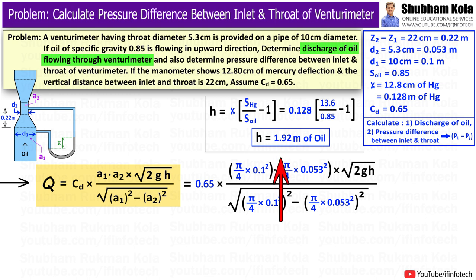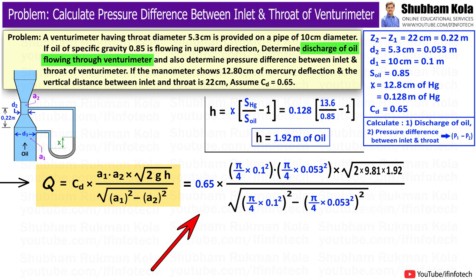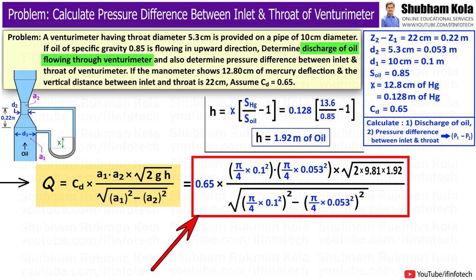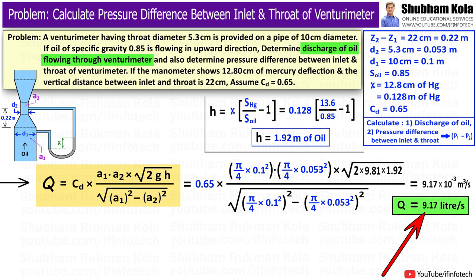Substituting the calculated value of h into the discharge formula, with g equal to 9.81 m/s², we get the discharge of oil equal to 9.17 × 10⁻³ m³/s, which is equal to 9.17 liters per second.